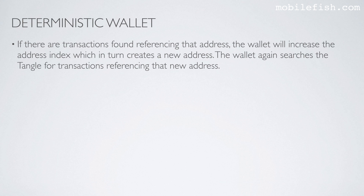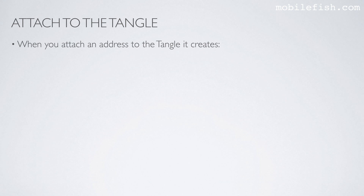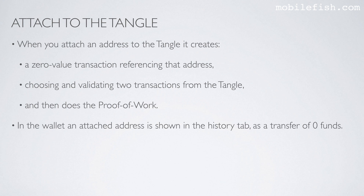The wallet again searches the Tangle for transactions referencing that new address. The wallet will skip any address index where it sees that the corresponding address has already been attached to the Tangle. When you attach an address to the Tangle, it creates a 0-value transaction referencing that address, choosing and validating two transactions from the Tangle, and then does the proof of work. In the wallet, an attached address is shown in the History tab as a transfer of 0 funds.